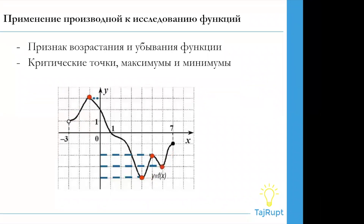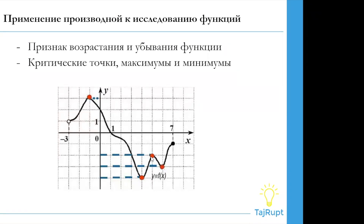Итак, кто может сказать, в каких промежутках график функции возрастает и убывает и назвать критические точки? Чонгир Акильжанов, можешь назвать промежутки возрастания и убывания? Хорошо, сейчас от минус 3 до минус 1 возрастает, от минус 1 до 4 убывает, от 4 до 5 опять возрастает, от 5 до 6 убывает, и от 6 до 7 возрастает.